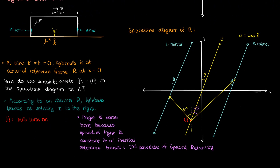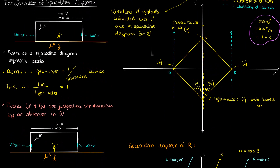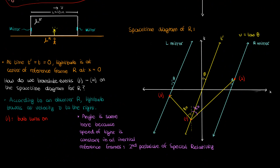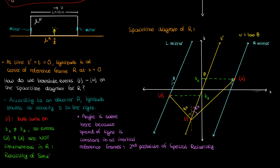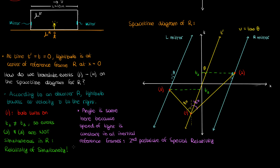Because the light lines are still at 45 degrees in reference frame r, the left light line hits the left mirror at event 3 and the right light line hits the right mirror at event 2. Now notice something peculiar: in r' events 2 and 3 were simultaneous, occurring at the same value of t'. But in reference frame r, event 2 occurs at a later time t2 while event 3 occurs at an earlier time t3. Clearly, events 2 and 3 are not simultaneous in r — and this is the relativity of simultaneity: two events perceived as simultaneous in one reference frame may not be simultaneous in another.